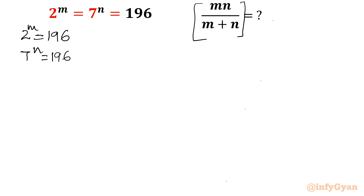You must be thinking that I will take log both sides — m log 2 equals log 196, so m equals log 196 over log 2 — and put the value log 2 as 0.3010 and log 196 respectively to get m and n. However, this question has appeared in many exams where applying numeric log values is not allowed. You can use properties, but you cannot apply the numeric value of log. So keeping that in mind, we will use properties of logarithms and exponents.